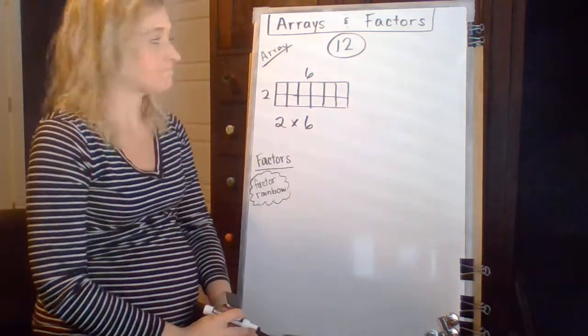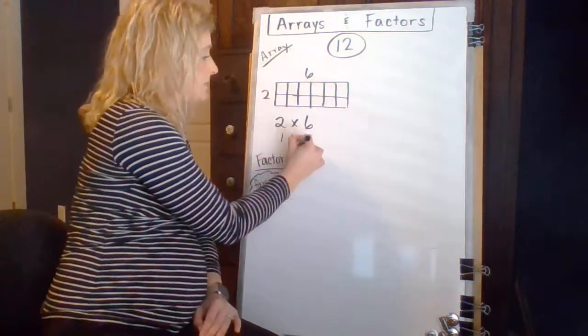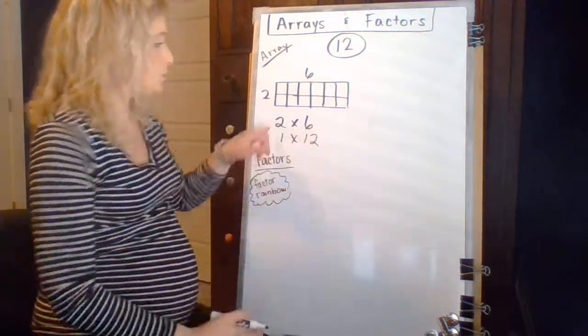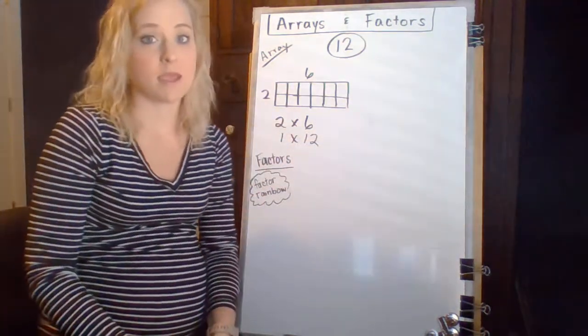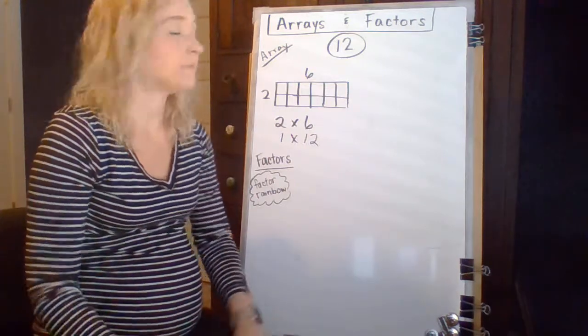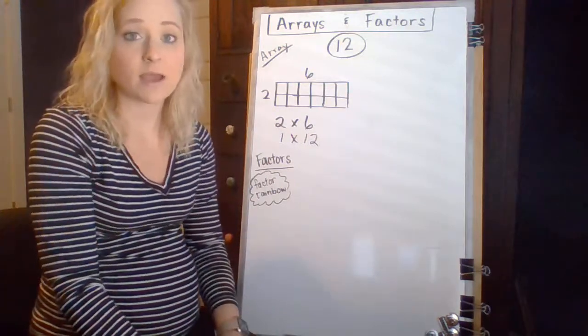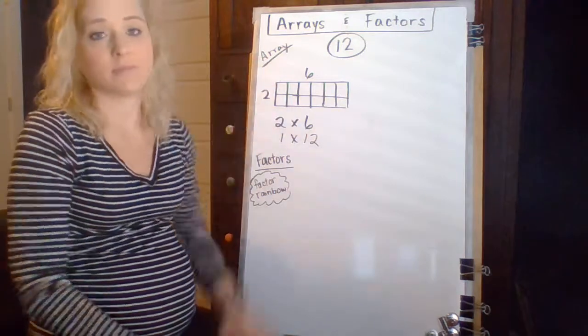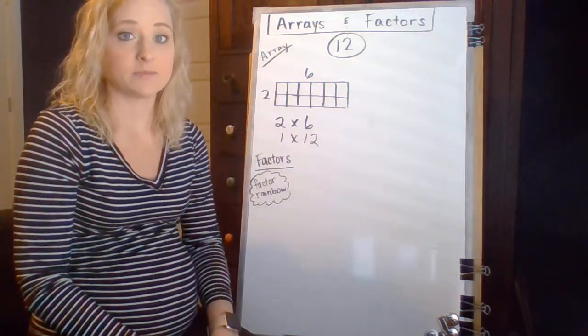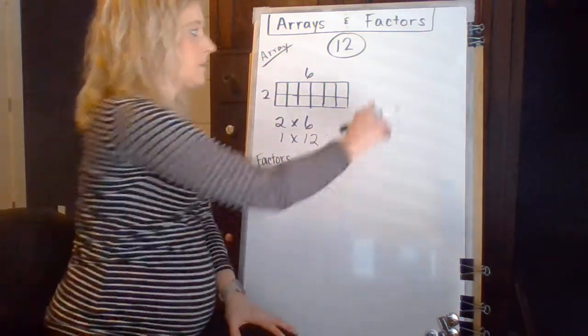The answer is yes, you can. And so if I have two rows, how many are going to go in each row? Two rows, how many go in each row to make 12? Two groups of 6.